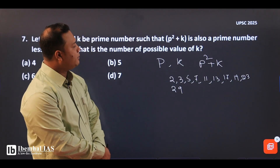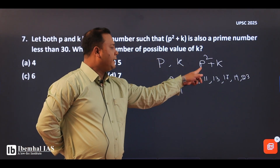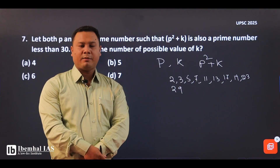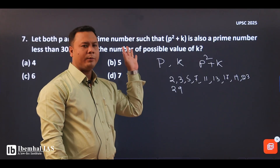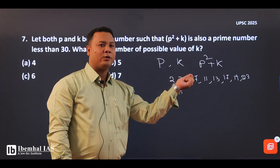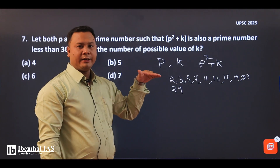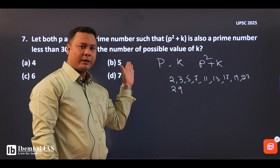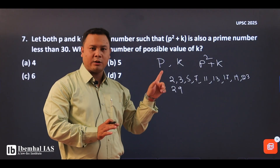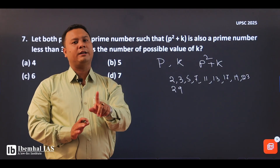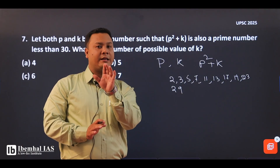P squared plus k — higher values: if p=5, then p squared is 25, and 25 plus k would exceed 30. So for p values above 5, p squared is already 36 or more, which is higher than 30. The number of valid cases is limited.